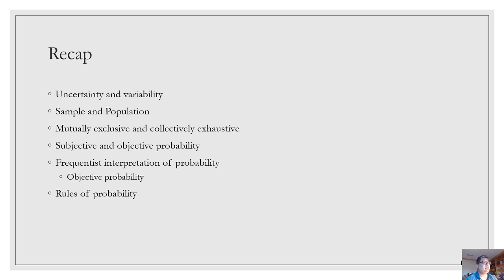We talked about uncertainty and variability. Uncertainty arises because of incomplete information, and usually we can minimize or sometimes even eliminate uncertainty by taking additional data. Variability, on the other hand, is the natural fluctuations that we will see, particularly in natural systems — the intrinsic differences that appear within a system. And while variability cannot be eliminated, collecting additional data can help us better characterize it.